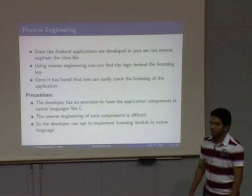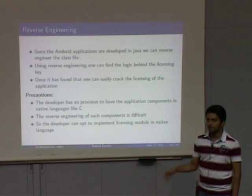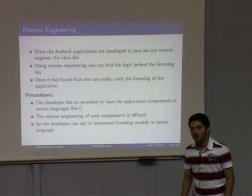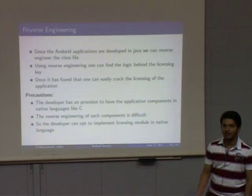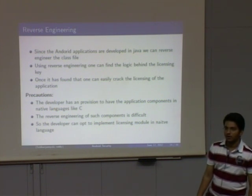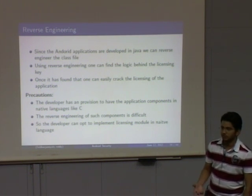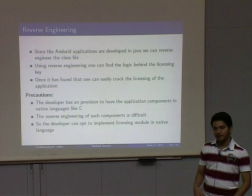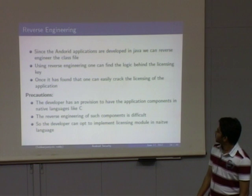Another attack is reverse engineering. Since Android applications are developed in Java, class files can be decompiled back into Java source. The logic behind the code can be traced, allowing attackers to crack licensing. To prevent this, Android allows native C components in applications. Since reverse engineering is harder in native C/C++, the licensing model can be implemented in native C so reverse engineering is not possible.